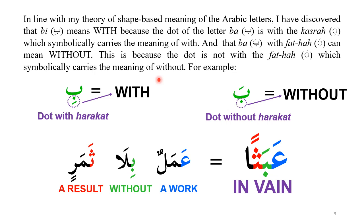I discovered something new which is in line with my theory of shape-based meanings of Arabic letters. Ba means 'with' because the dot is with the harakat — the kasra is with the dot, so this is a visual representation of the meaning 'with.' And if you look at Ba without the harakat, the dot is without any harakat, so this gives the meaning of 'without' — this is my discovery.